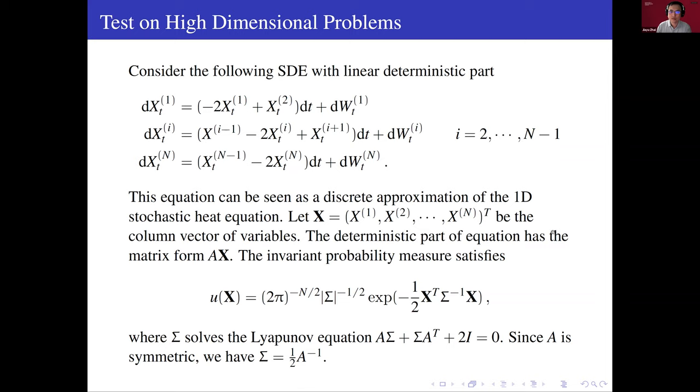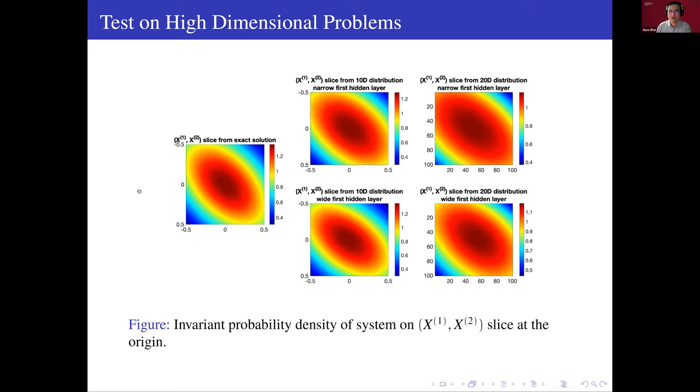We also test our method on high-dimensional problems. We consider this dynamic system whose invariant measure is also known. It's worth noting that in this high-dimensional problem, the restriction of the density function in the first two dimensions will be always the same. So this provides us an opportunity to compare the method on different dimensions. So we test it on two-dimensional entities, 10 and 20. We can see that if we use the same structure of the neural network, it works better on a lower-dimensional case.